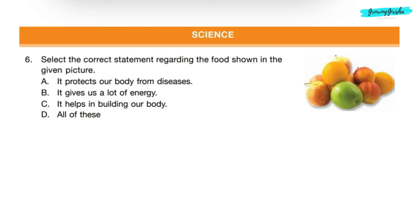Science. Question 6: Select the correct statement regarding the food shown in the given picture. The given picture shows fruits. Green vegetables and fresh fruits protect our body from various diseases and do not let us fall ill. They are called protective foods. So correct answer is option A.